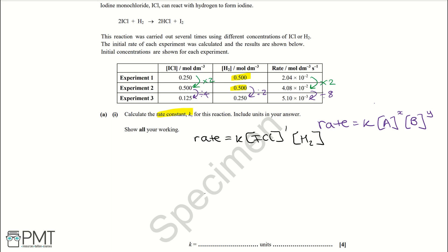Looking at it another way: from experiment one to two, ICl is multiplied by two and H2 is multiplied by one, giving a rate factor of two times one equals two. From experiment two to three, ICl is divided by four and H2 is divided by two: four times two equals eight, so the rate is divided by eight. This matches if H2 is first order, confirming the order with respect to H2 is first order.